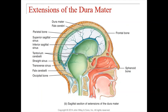The third extension of the dura mater is the tentorium cerebelli. It's a bit hard to see in the image because it comes out toward you in an x-axis plane. You find the tentorium cerebelli between the cerebrum and the cerebellum. So, to recap: falx cerebri between the two cerebral hemispheres, falx cerebelli between the two halves of the cerebellum, and tentorium cerebelli between the cerebrum and the cerebellum.